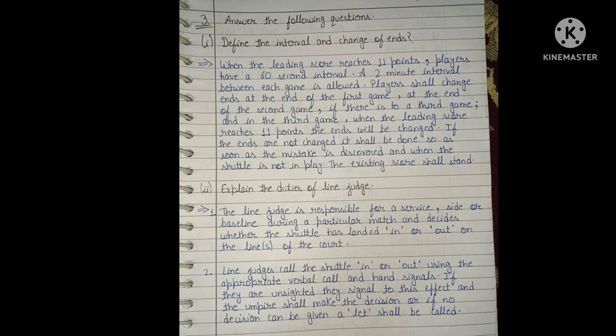Question four: explain the duties of the line judge. The line judge is responsible for a service, side, or baseline during a particular match and decides whether the shuttle has landed in or out on the line of the court. The line judge calls the shuttle in or out using the appropriate verbal call and hand signals. If they are unsighted, they signal to this effect and the umpire shall make the decision, or if no decision can be given, a let shall be called.